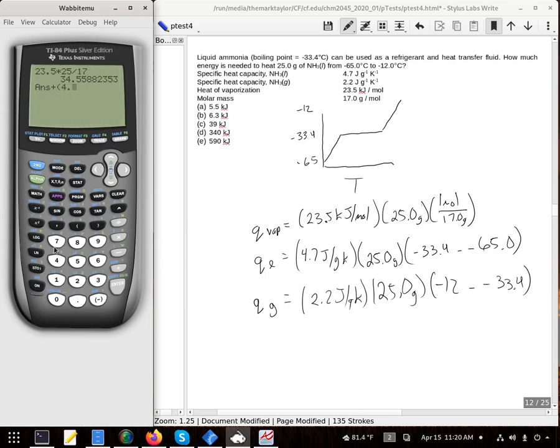We're going to add to that the result we get from 4.7 times 25 times quantity 65 minus 33.4. Close all those parentheses. That's going to be joules, this is kilojoules, so that's not a good thing to add up.